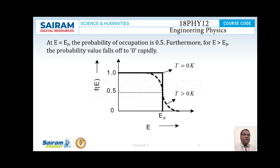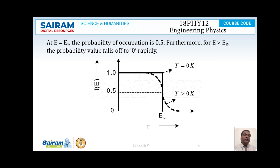For E greater than EF, the value of F(E) becomes 0, and for E less than EF, the value of F(E) becomes 1. When we plot a graph of F(E) versus energy at 0 degree Kelvin, the curve obtained is as shown in the picture.